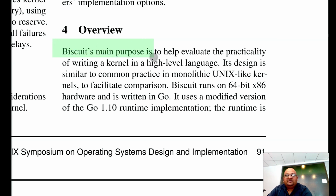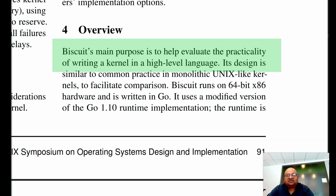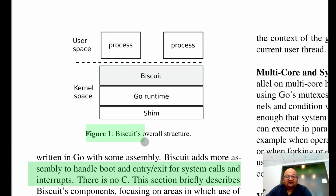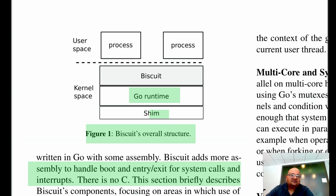The main goal of Biscuit was to evaluate the practicality of writing a kernel in a high-level language. As such, the authors used a standard monolithic kernel architecture. It uses a small amount of assembly to handle the bootloader and the entry and exit point for system calls, and it uses no C. In terms of the overall architecture, the kernel uses a largely unmodified Go runtime, with the exception of the shim layer.